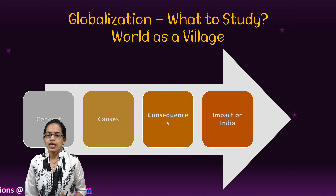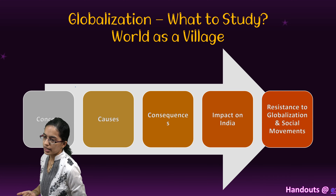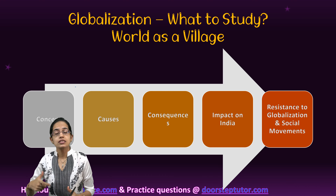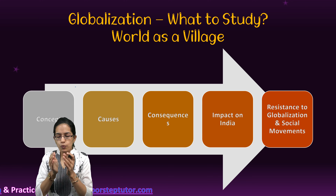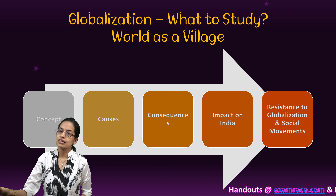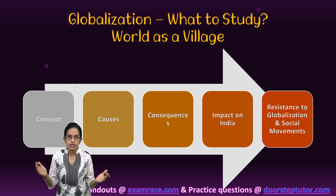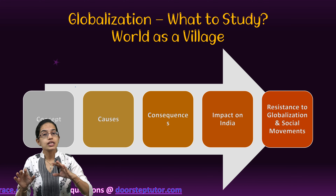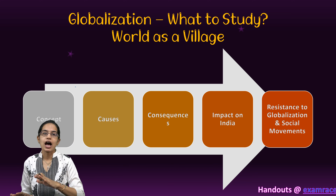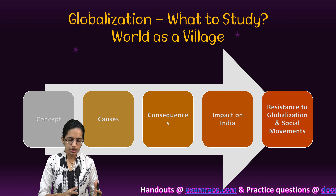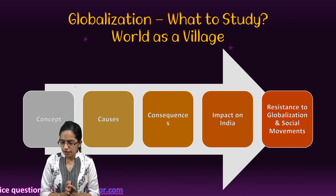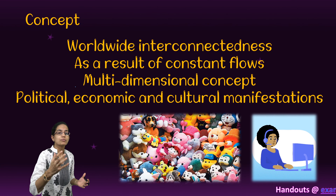We'll understand globalization in depth today, including the impact on the Indian economy. Over time, a worldwide interconnectedness has emerged through constant flows. When the British ruled India, raw materials were exported and finished products were imported — a trade relation that established between the two nations. Numerous such trade relations followed, and the flow of globalization slowly started due to political motives and economic gains for certain nations, leading to abrupt changes in systems and processes.